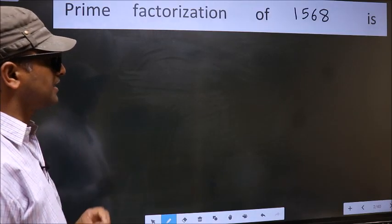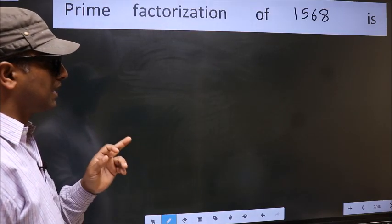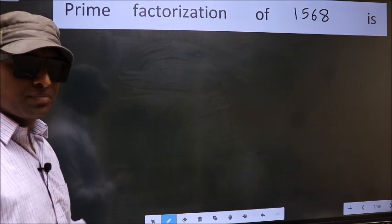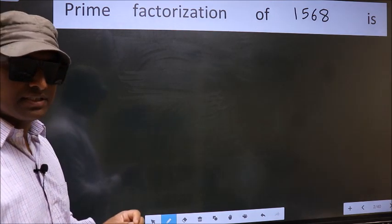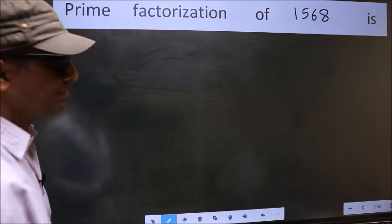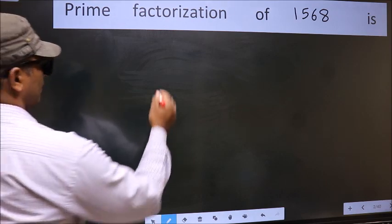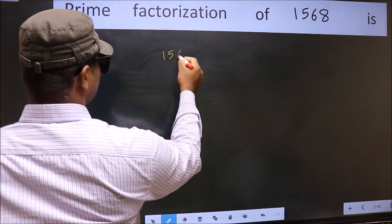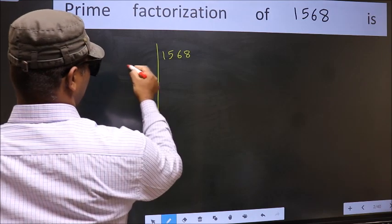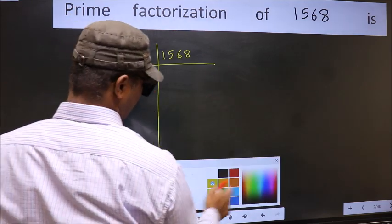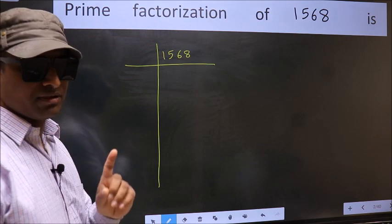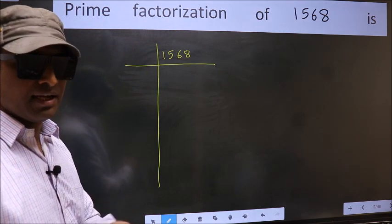Prime factorization of 1568. To do prime factorization, first we should frame it in this way: 1568. This is your step 1.